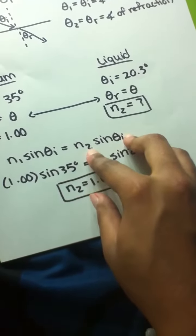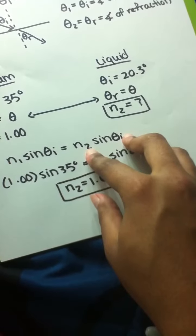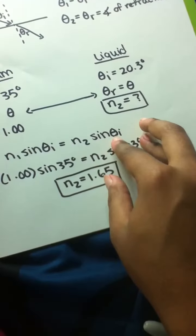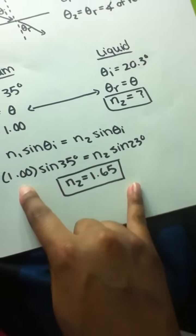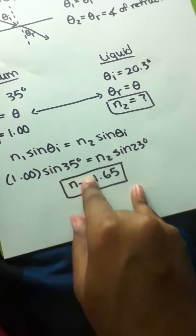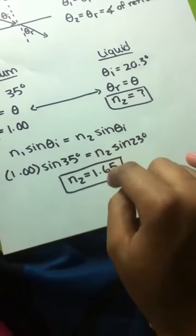Times sine the angle of incidence for the liquid. From here, all we have to do is just plug in the values, and then we find the value for n₂, and it is equal to 1.65.